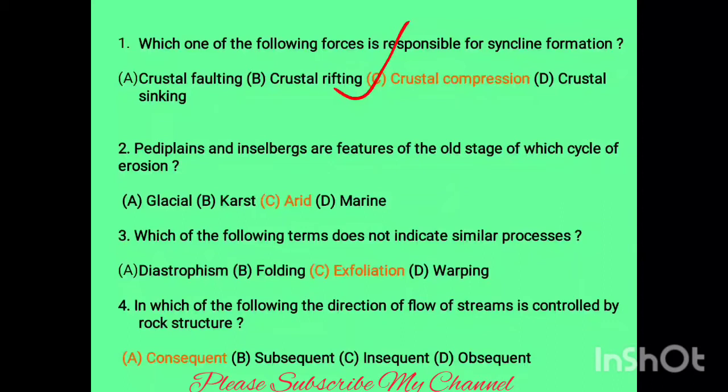The next question is: peneplain and inselberg are features of the old stage of which cycle of erosion? Options are glacial, crust, aeolian, and marine. Aeolian is the right answer — due to the aeolian process of erosion, peneplain and inselberg are formed.